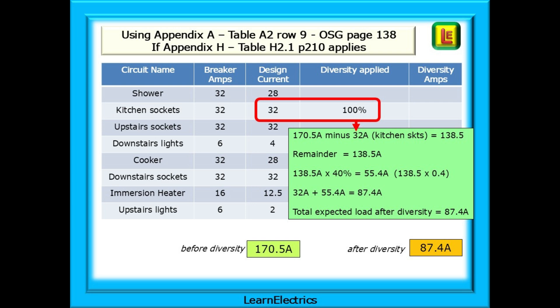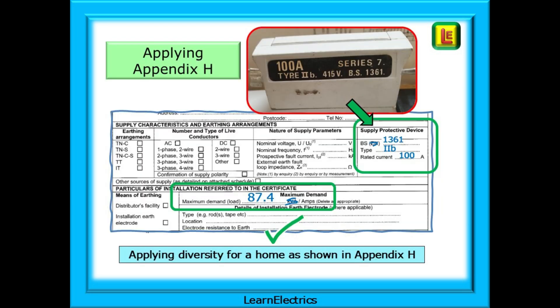Let's put this onto the installation certificate. The same cutout rating of 100 amps, and now the maximum load after diversity is 87.4 amps. For this installation, common to thousands of homes, the figures now look right. And that is a maximum demand at peak usage — there will be many hours of each day and night when the electrical demand is much, much lower.